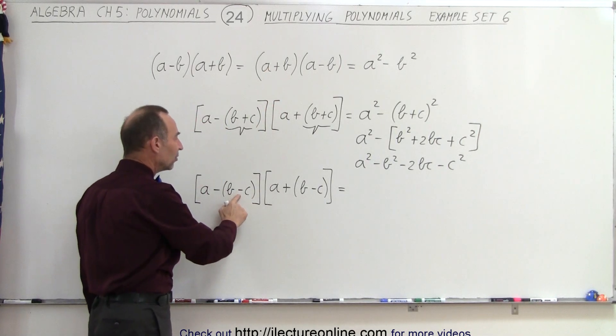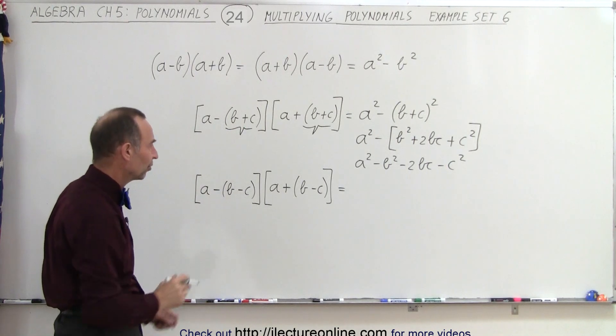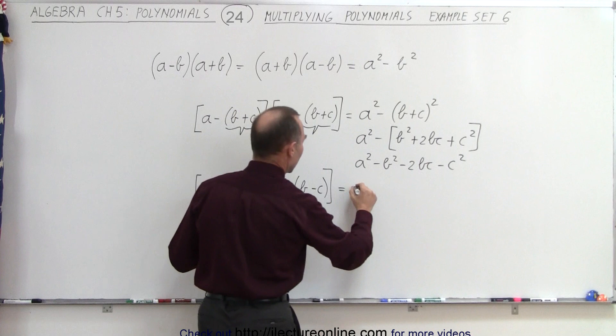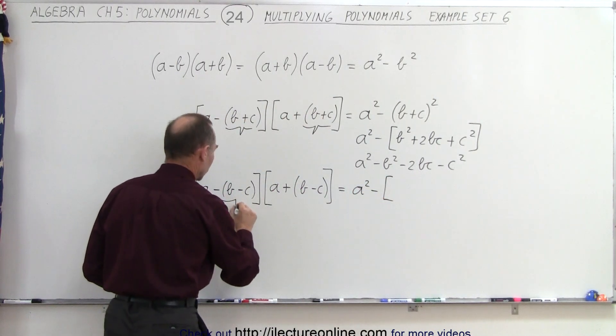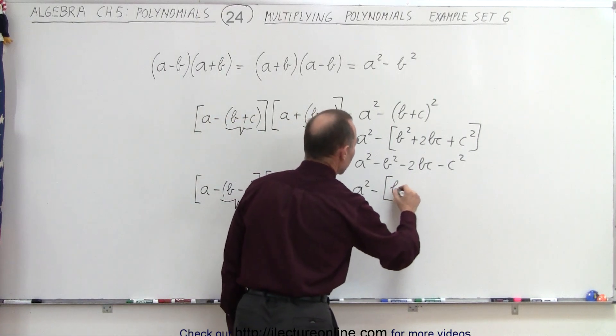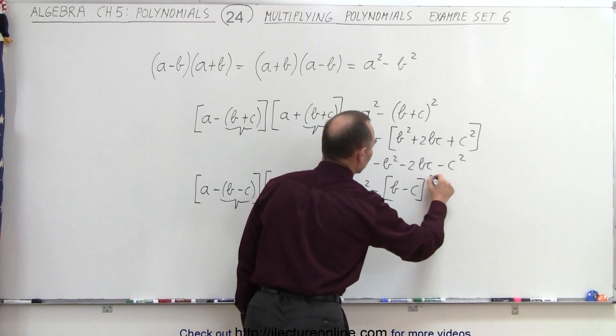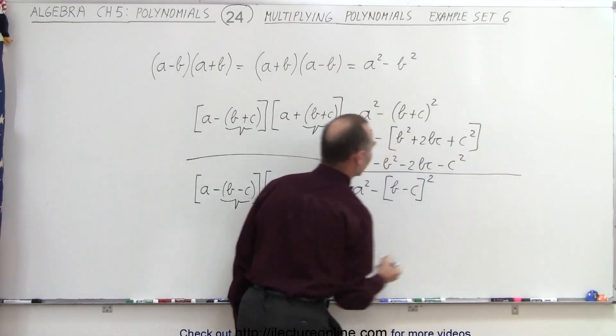Now what if we have b minus c instead of b plus c? Well, there's just a slight difference, but the approach would still be the same. It would be a squared minus the second term squared, when we think of this as a single term, and so this would be b minus c quantity squared. Let me put a line here so we don't confuse ourselves.